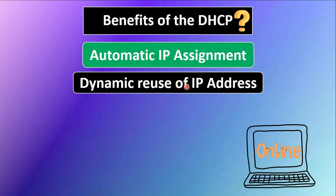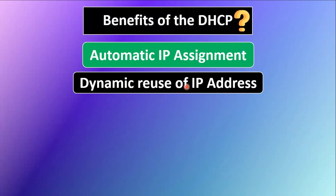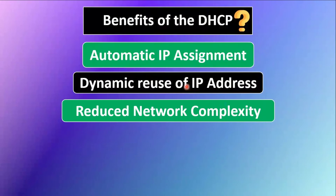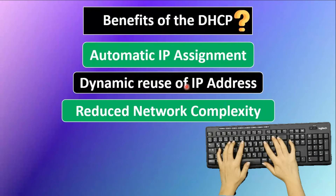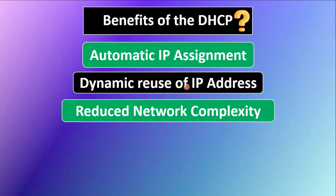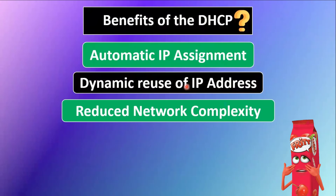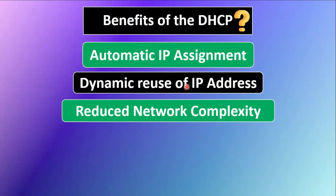Second is dynamic reuse of IP addresses. DHCP reassigns IP addresses when a device disconnects from the network. When a new device connects, DHCP will reuse those IP addresses. This also enables the network to use a limited number of addresses to support a large number of devices.